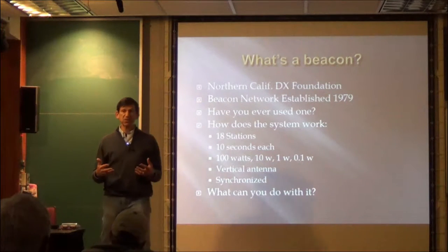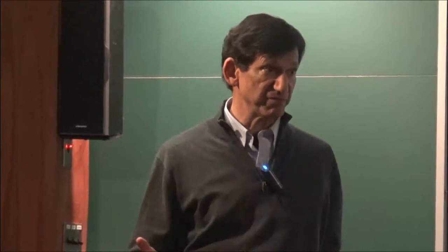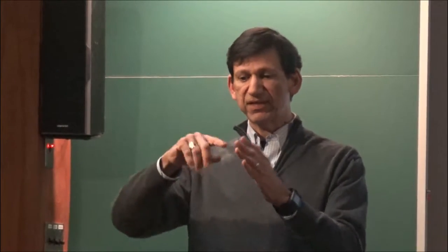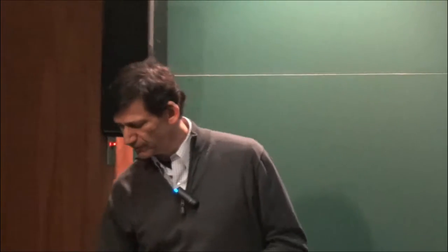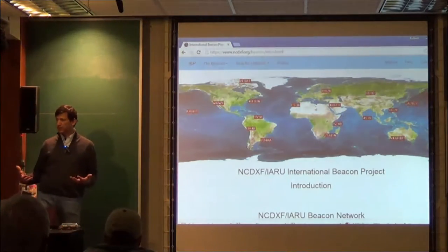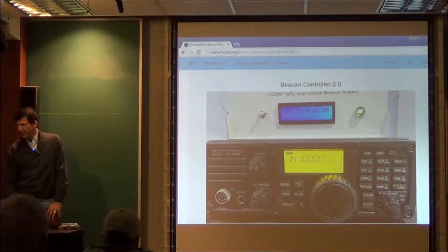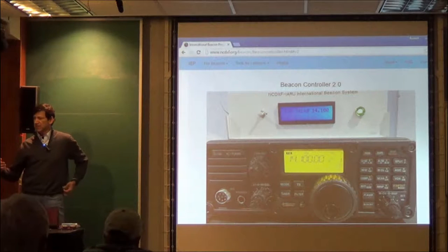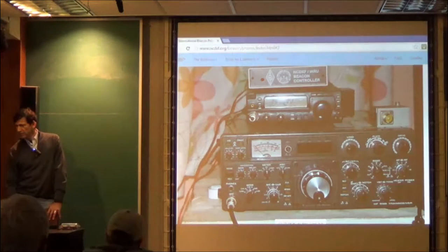It's expensive to maintain because each of those is a real station running with a real controller that has to be maintained. It actually runs on five bands. So what happens is a station will transmit on 20, and then if you're just on 20 meters, you can listen to all the beacons. But as soon as it's finished on 20, it'll drop down to 17 and 15 and so on. So it covers the bands.